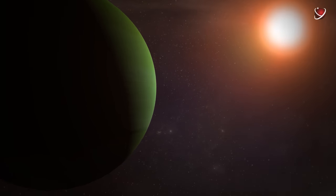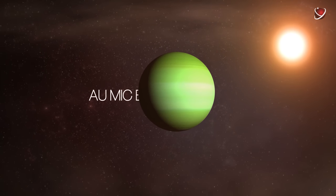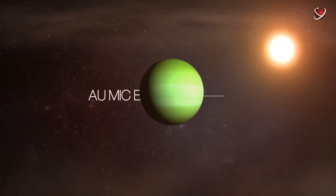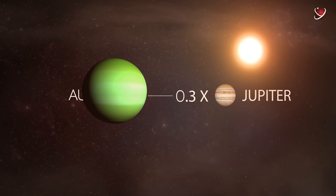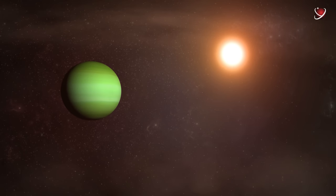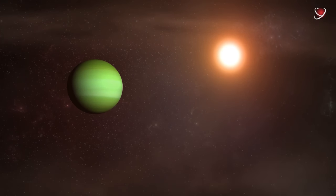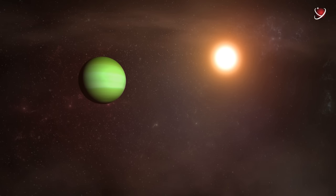The team of astronomers concluded that the AU Mic b planet is a Neptune-like gas giant, 0.3 the size of our Jupiter, and just over 20 Earth masses. It is a truly hellish place because of the young age of the star. No wonder it behaves like a naughty baby, it's only 22 million years old.